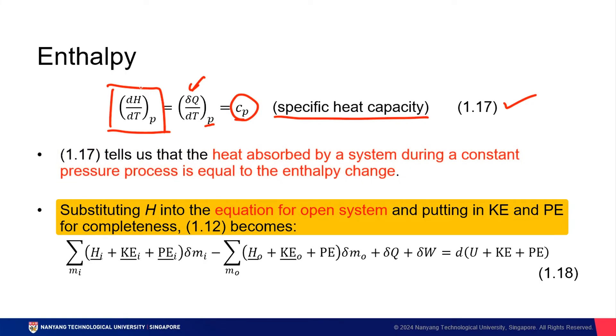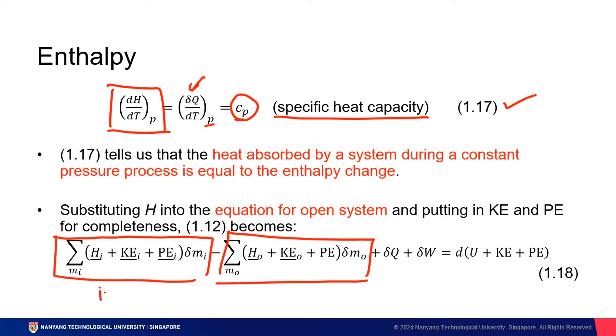So if we were to take the enthalpy equation and to put it into an open system, assuming a constant pressure condition, the change is really quite minor. It's the total of inputs minus the total of the output plus change in heat and change in work. The only difference is that we substitute enthalpy for heat. And that leads to the complete description of a change in energy, which is a change in internal energy plus kinetic energy and potential energy.